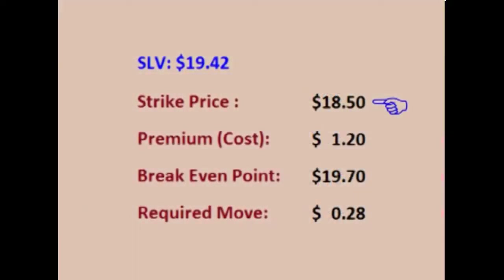The $18.50 strike locks in a buy price of $18.50 a share. If the price of SLV stays above $18.50, the trader can use this option to buy SLV for $18.50, sell it for the current price, and keep the difference. This option costs $1.20 per share up front, so for the trade to be profitable, the price of SLV has to be above $19.70 to cover the $1.20 cost.